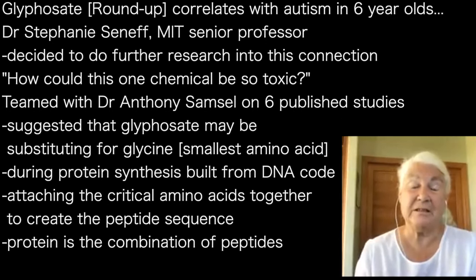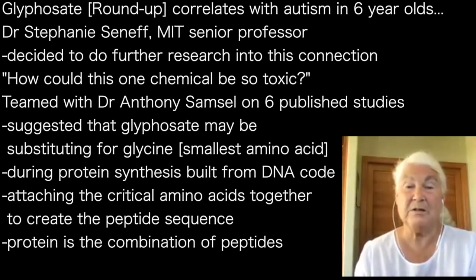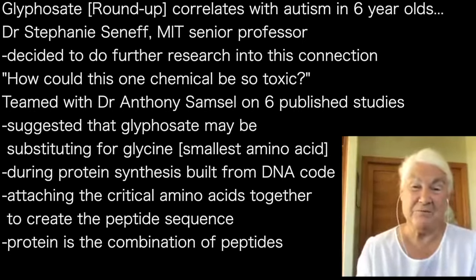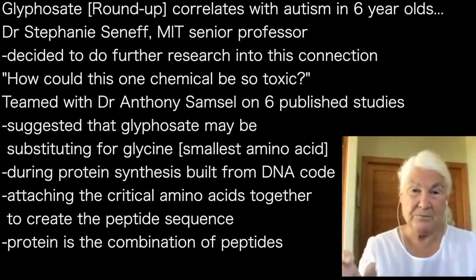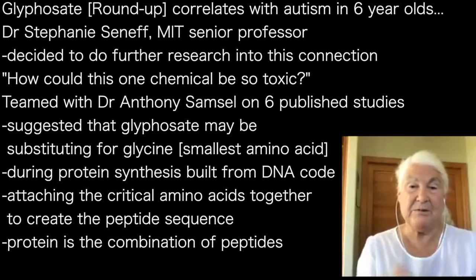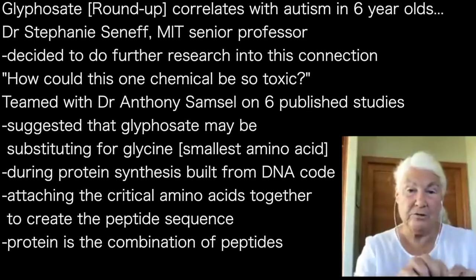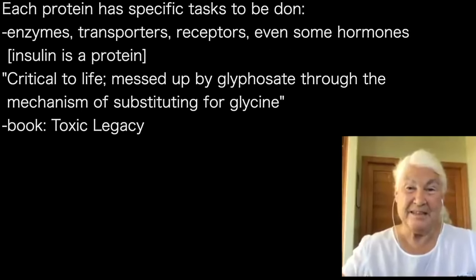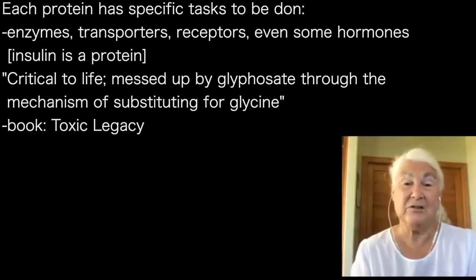He was the one who suggested to me that it might be substituting for glycine during protein synthesis. Glycine is an amino acid — it's the smallest amino acid, one of the 20 building blocks of proteins. You have that four-letter DNA code, the nucleotides lined up like beads on a string, and you read them off three at a time. Each triplet has a specific code for a particular amino acid, and from that code the protein is built, also beads on a string attaching amino acids together. That's called a peptide sequence, and a protein is a whole bunch of peptide sequences put together, each doing incredibly specific things.